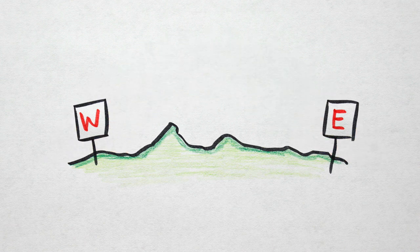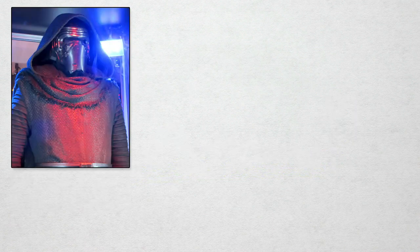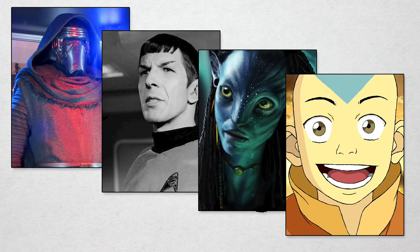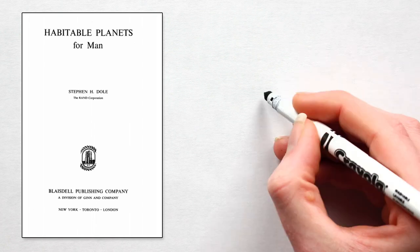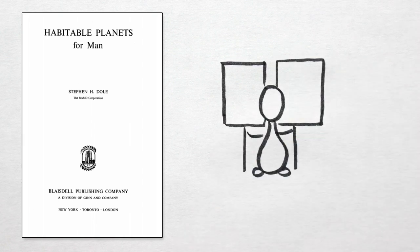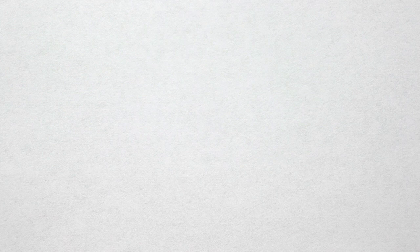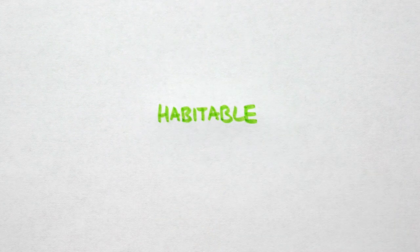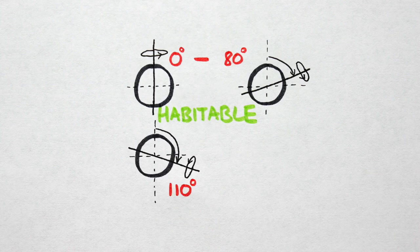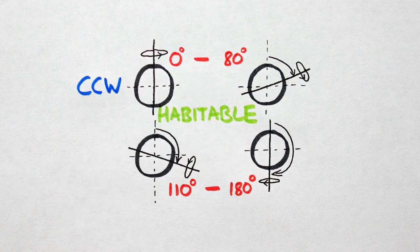Next decide whether or not your planet will be inhabited by carbon-based, bipedal, humanoid life forms. According to Stephen Dole, delicate sacks of water like us couldn't tolerate living on planets with more than 80 degrees of axial tilt. So for habitable worlds, choose values between 0 and 80, or 110 and 180, depending on your desired spin.